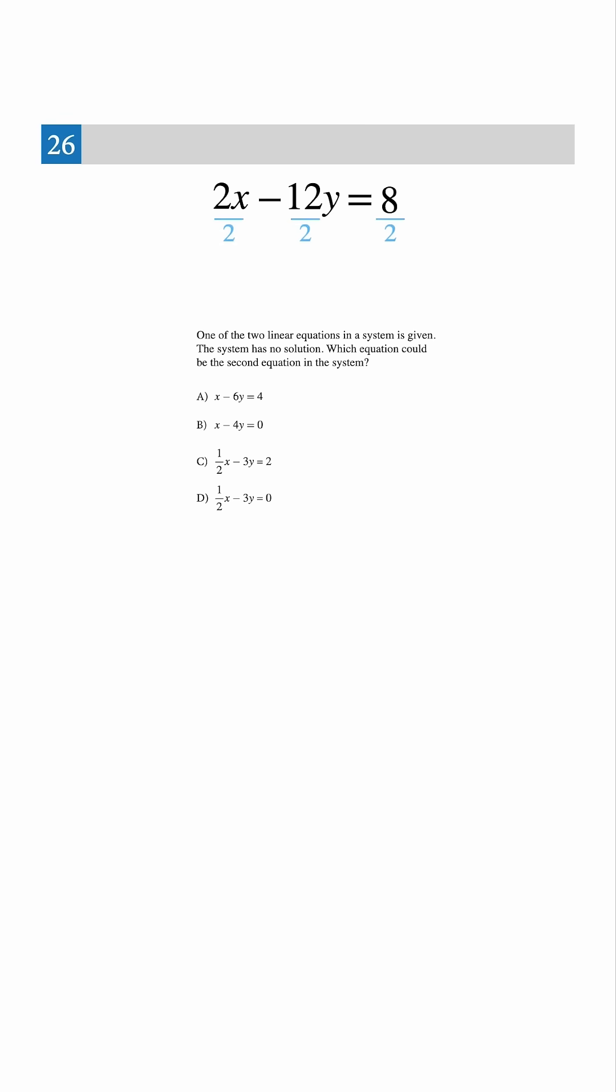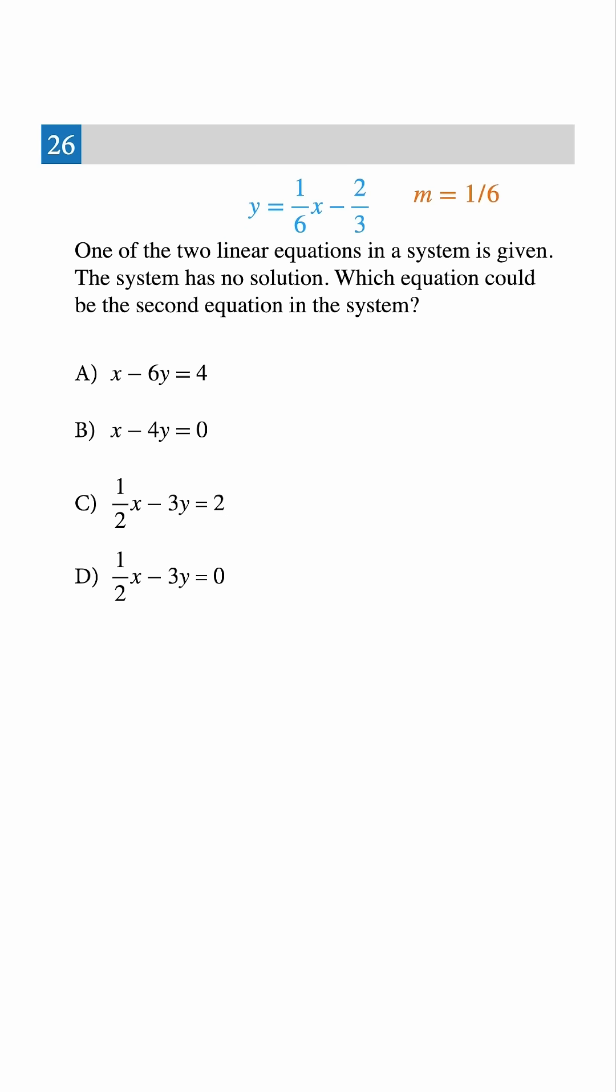Let's start with the given line. Divide everything by 2, and we get x minus 6y equals 4. Now, isolate y and move x to the other side. We get negative 6y equals negative x plus 4. Then divide both sides by negative 6. That gives us y equals 1 sixth x minus 2 thirds. So the slope is 1 sixth, and the intercept is negative 2 thirds.